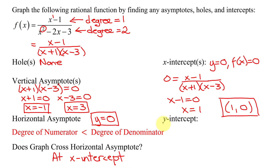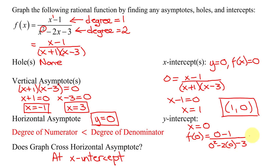Lastly, I need to find the y-intercept, which we do by setting x equal to 0. Plugging in 0: I get 0 minus 1 over 0 squared minus 2 times 0 minus 3. That gives negative 1 divided by negative 3, which is positive 1 third. So the y-intercept is at the point (0, 1/3).